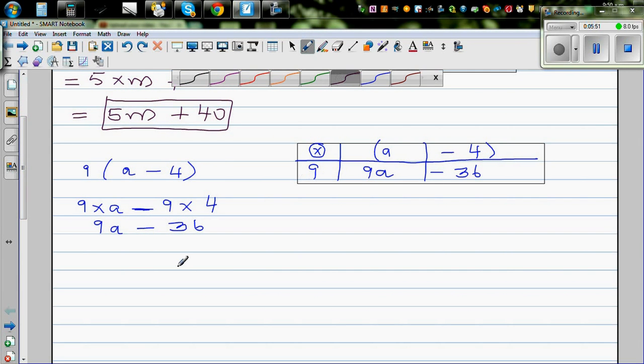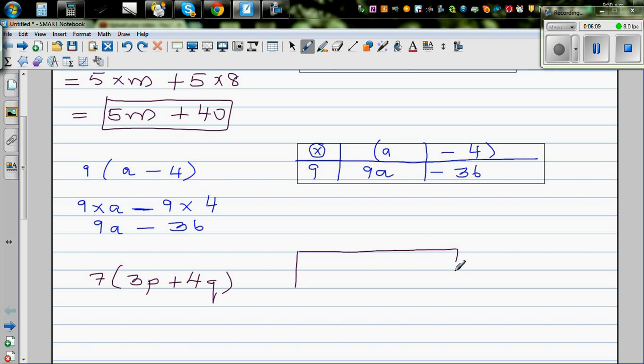What happens if it is 7 bracket 3p plus 4q? Same process, no different. You make a grid, or make a rectangle. Split. So this is 1 by 2 digits. Let me write 7 here. This is 7 times (3p + 4q). Just to show you the bracket here.